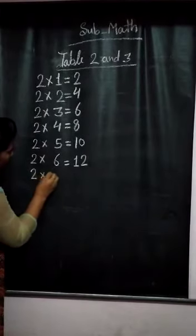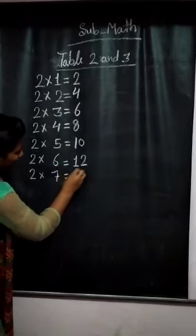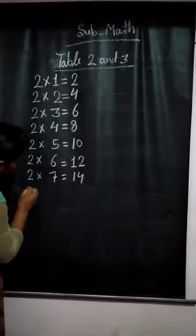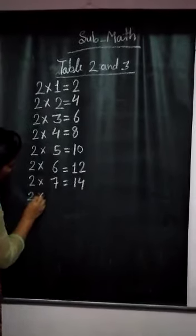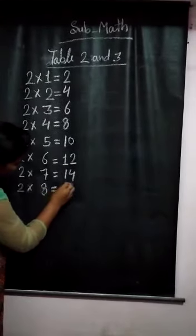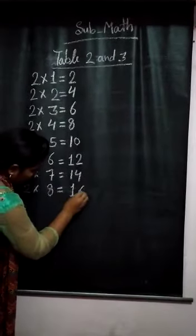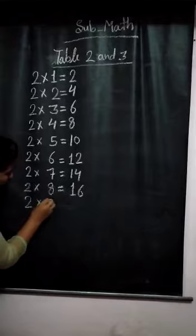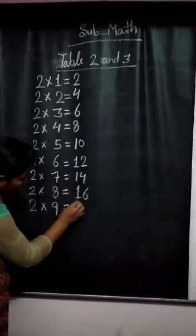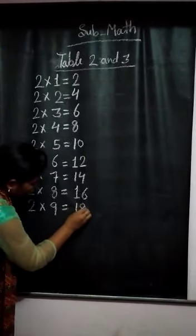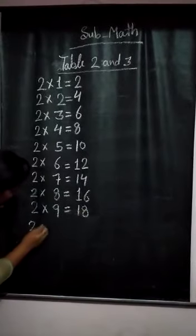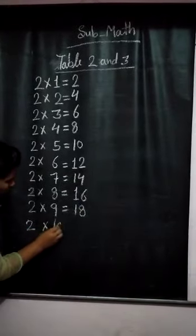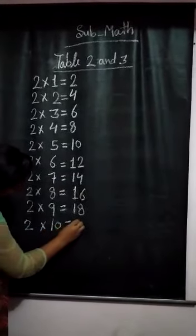2 times 7 are 14. 2 times 8 are 16. 2 times 9 are 18. 2 times 10 are 20.